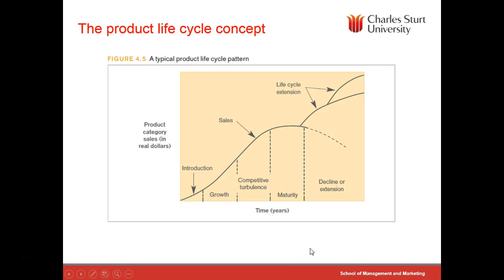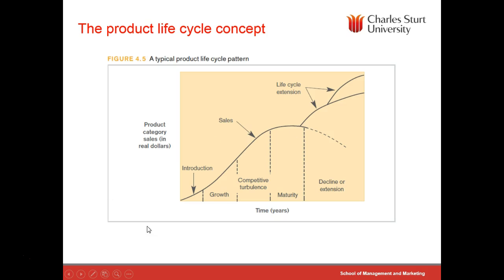Another way of thinking about where we might want to position the firm is where we might sit on the product lifecycle, and whether we can extend that lifecycle. While the product lifecycle has come in for some criticism — in that you can't always know exactly where you are — it is important to recognize that sales do not go on forever; they will eventually decline as substitutes or new products enter the market. This also represents market evolution, and provides important guidelines around growth strategies, competitive strategies, mature-phase strategies, and the decision of whether to extend a lifecycle.